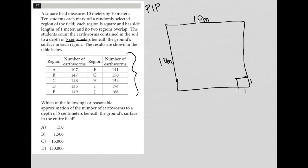So we have our table here. It looks like each of these regions represents one of the students. And then we have the number of earthworms that each of those students counted within each of those one by one by five centimeter regions.